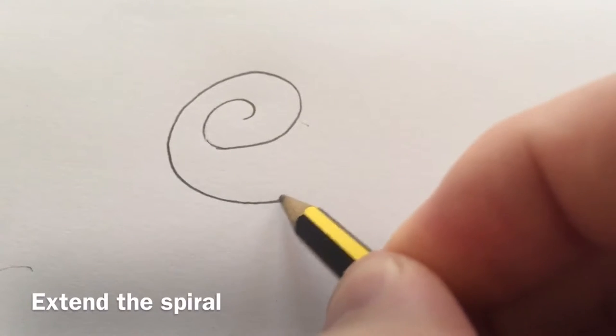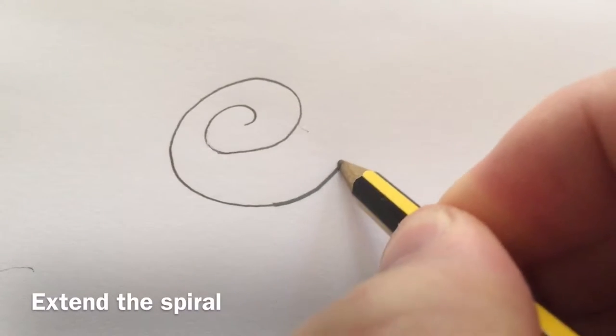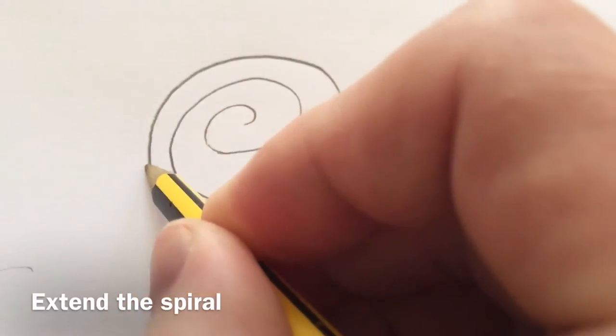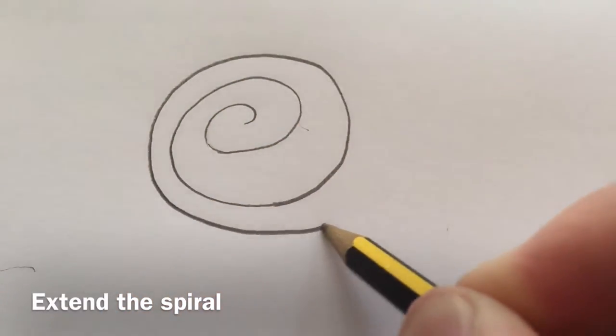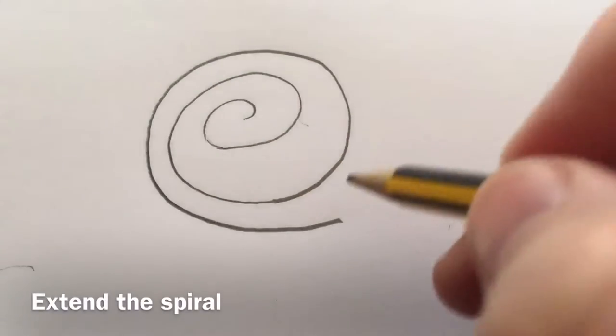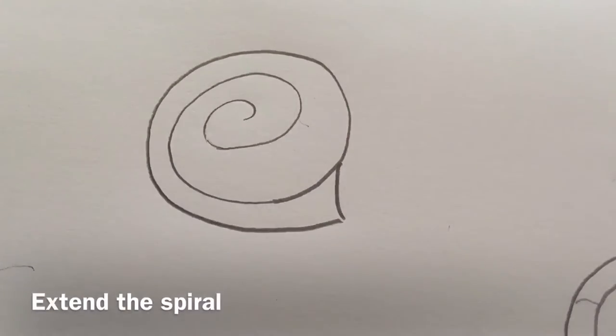And then what I'm going to do is I'm going to go all the way round from the bottom here. I'm going to draw all the way round so we end up with a nice big spiral shape. I'm just going to connect those up at the bottom.